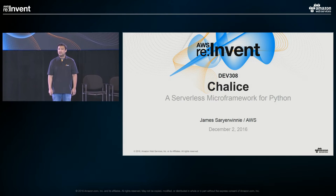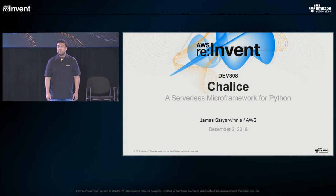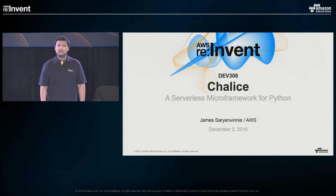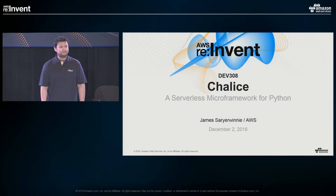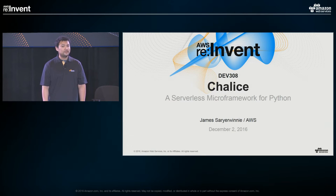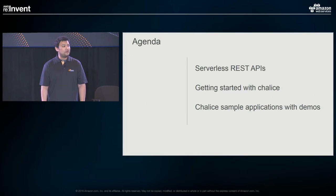I work on the SDKs and tools team. Some of the main things I work on are the AWS CLI as well as the AWS SDK for Python, also known as boto3. One of the other things our team does is we take our SDKs and CLIs and create libraries and frameworks that build on top of these in order to make developers even more productive.